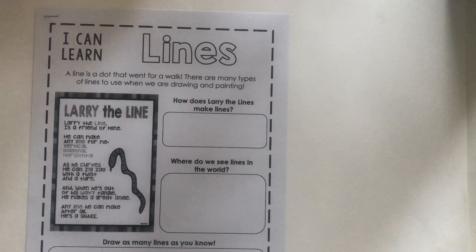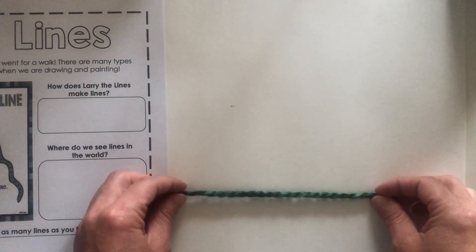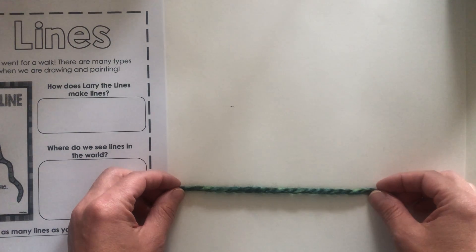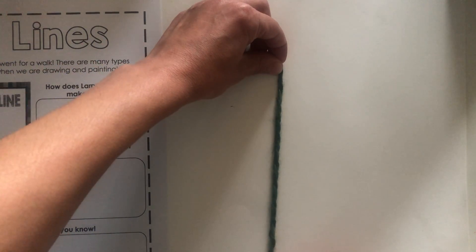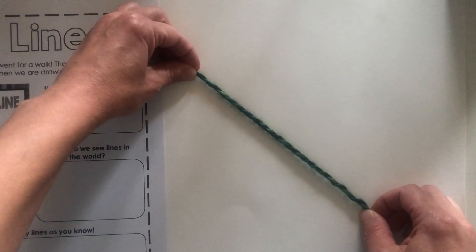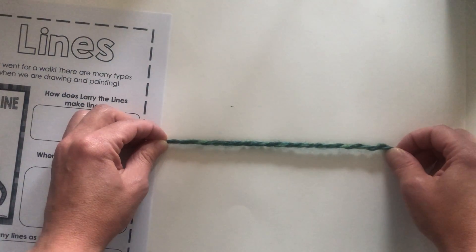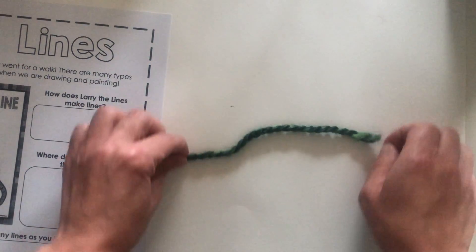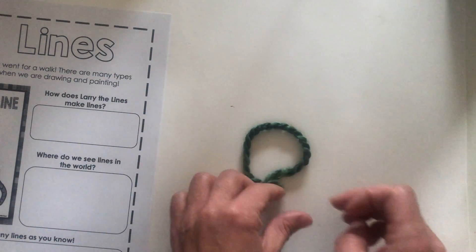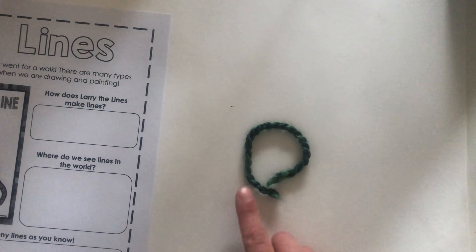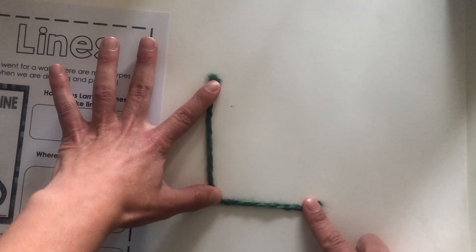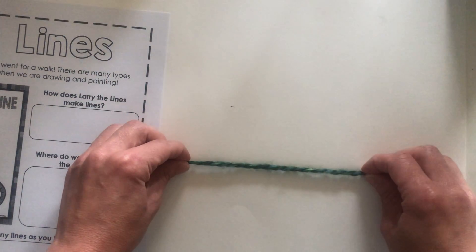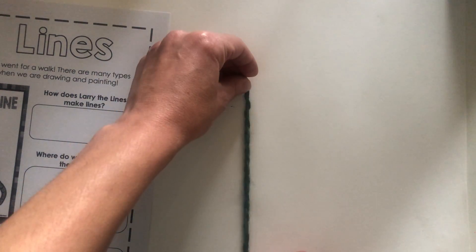First, to get started, I'm going to read you the poem Larry the Line. Larry the Line is a friend of mine. He can make any line for me. Vertical, diagonal, horizontal. As he curves he can zigzag and twist and turn. And when he's out of his wavy tangle he can make a very good angle. Any line he can make — after all, he's a snake.